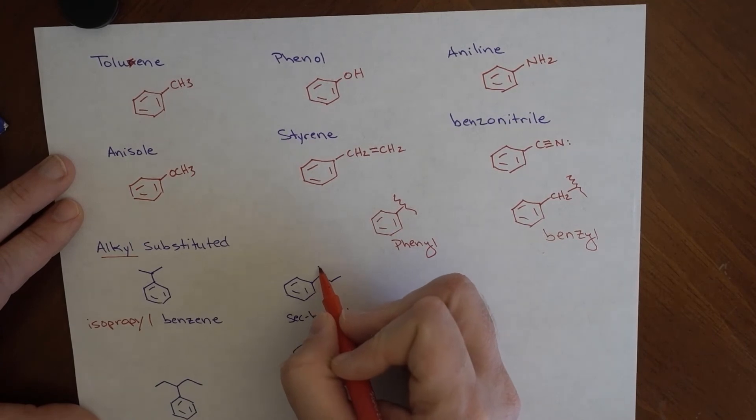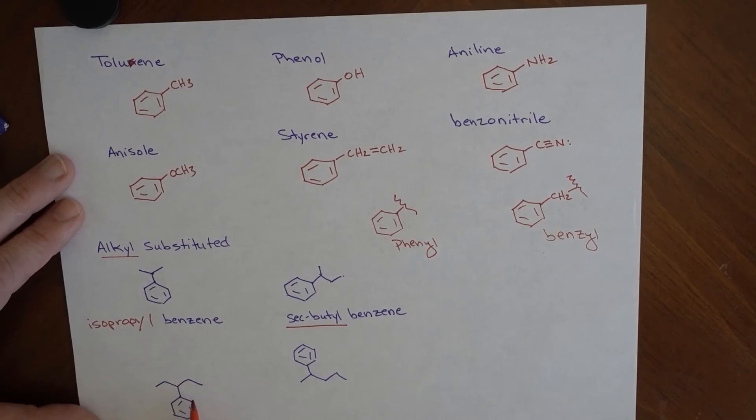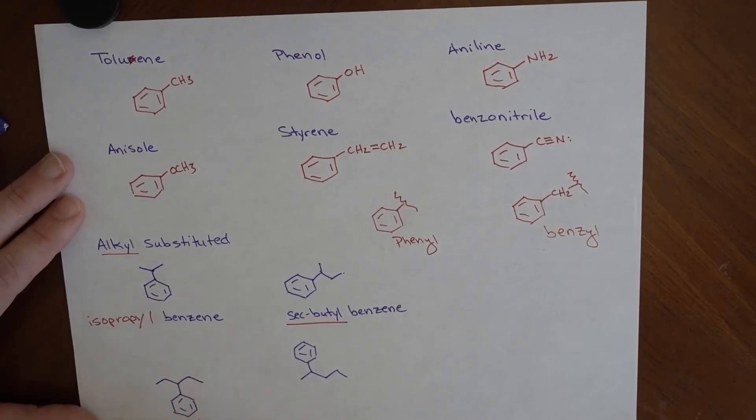We have a sec-butyl group here. So one, two, three, four carbons that's attached to the second one. So this is a sec-butyl benzene. We can't say that this is a sec-pentyl benzene because there's more than one sec-pentyl. And so what we end up saying is that this is a group that's attached to this.